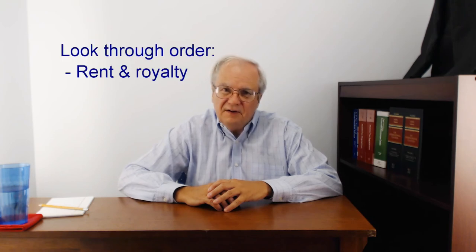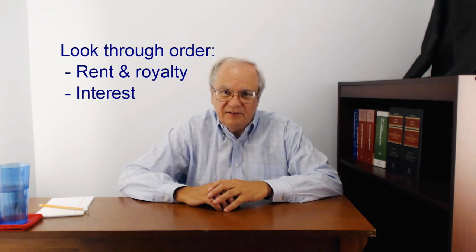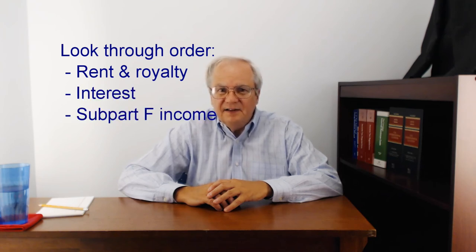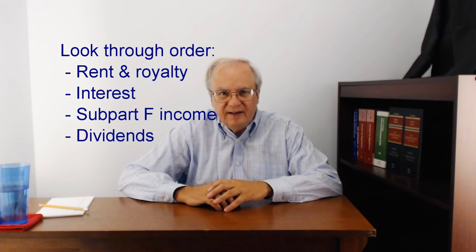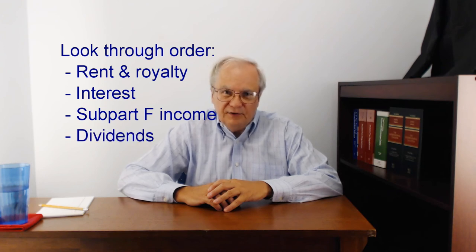There are ordering rules for determining Look-Through, since deduction items at the CFC or partnership level may impact other deductions and always impact dividends. First, calculate the Look-Through for rents and royalties. Next, calculate it for interest. Then calculate it for Subpart F income and partnership distributive share items. Finally, calculate the Dividend Look-Through.